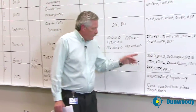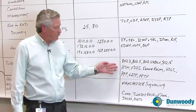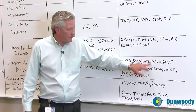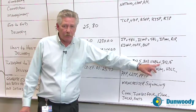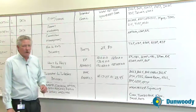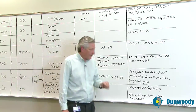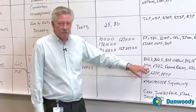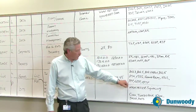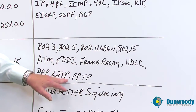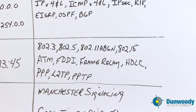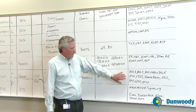At the data link layer, this is where a lot of protocols come into play, such as 802.3 (which is Ethernet), 802.5 (Token Ring), 802.11 A, B, G, and N — N being the newest, ratified in September of last year — and 802.15, which is Bluetooth. We also include ATM or asynchronous transmission, FDDI or fiber distributed data interface, frame relay, point-to-point protocols, layer two tunneling protocol (Cisco's protocol), and point-to-point tunneling protocol. A lot of things like VPN all run at the data link layer.